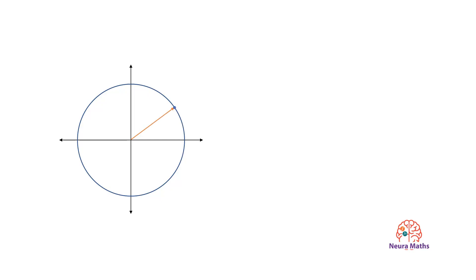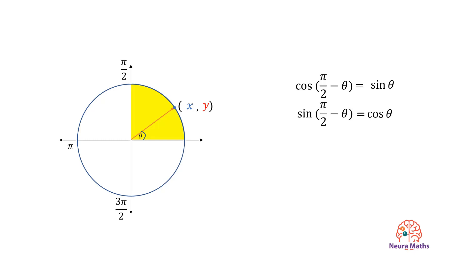Previously, we studied the unit circle and the properties of trig functions in quadrant 1. We learned that the trig function of any angle is equal to the co-function of its complementary. Now we are going to study reflection identities. Reflection identities are angle relations that result from reflecting an angle theta through the x-axis, y-axis, and the origin.